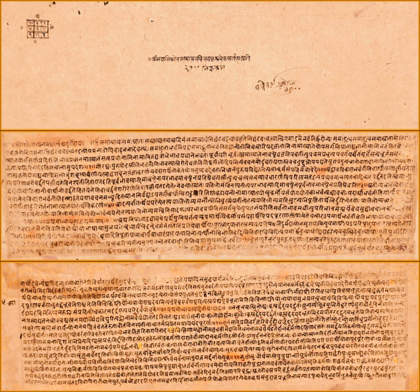Yaska, the sage who likely lived around the 7th century BCE, approached this problem through a semantic analysis of words, by breaking them down into their components, and then combining them in the context they were used to propose what the archaic words could have meant.